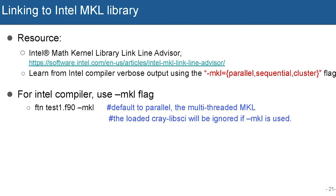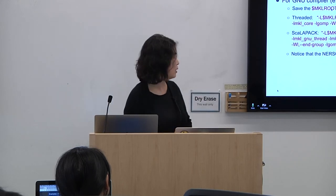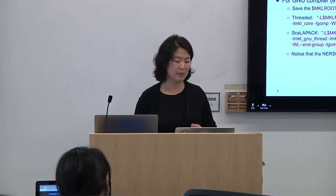Again, you can use the verbose option to see what libraries are included in your build when you use the -mkl flag. For GNU compiler, if you want to use MKL, you need to give the path where the library is. The easiest thing is to use the MKL_ROOT environment variable and explicitly provide those libraries.